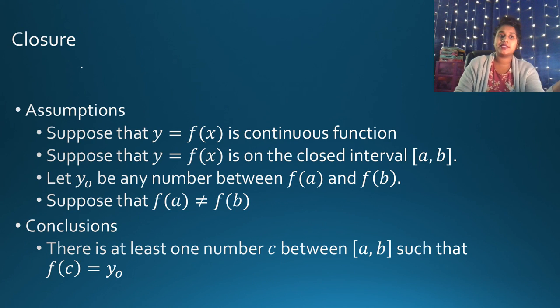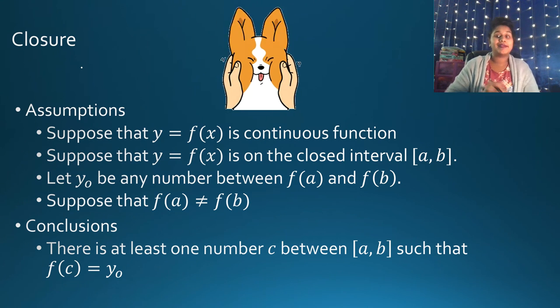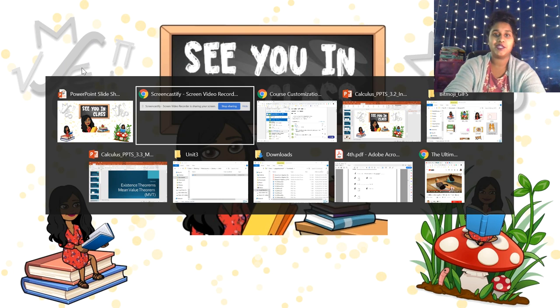Here's my closure, my assumptions. We know we're looking for continuity. We look for a closed. We know F of A does not equal F of B. If that's the case, then there must be some Y value in between that falls between whatever F of A is and whatever F of B is. So here's a little corgi squish just to kind of get you through your day. But I'll see you guys in class, and I'll see you in the next video. Thank you.